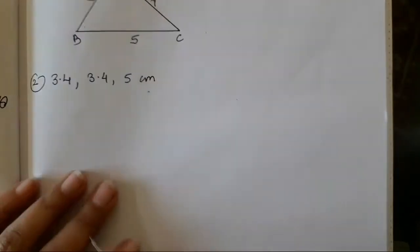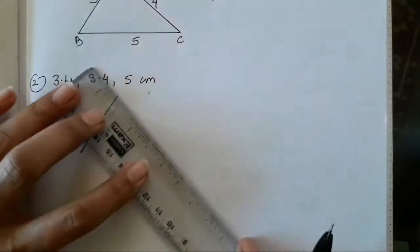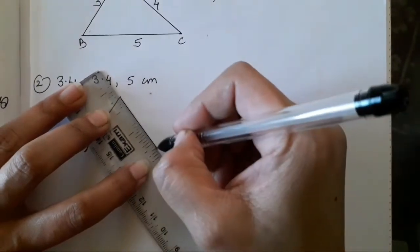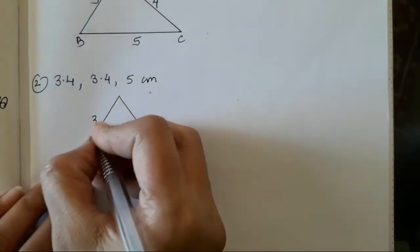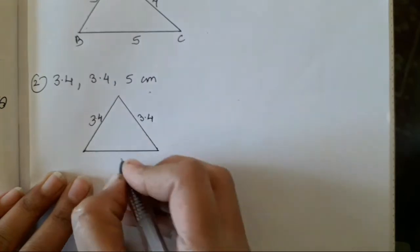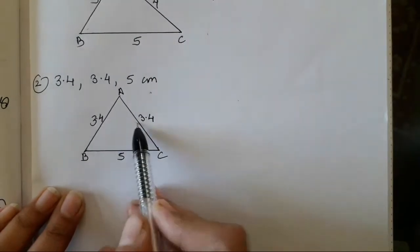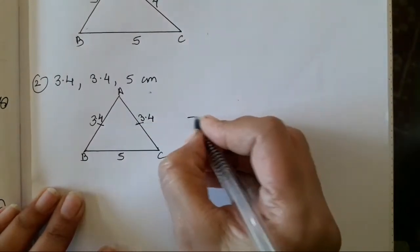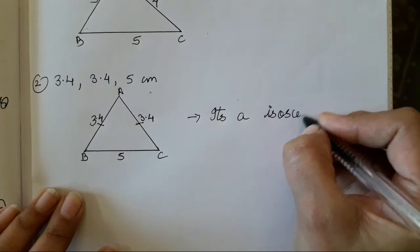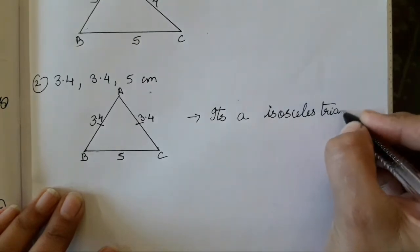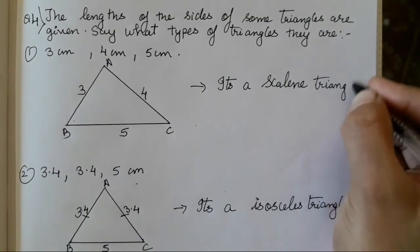Now question number 2: sides are 3.4 cm, 3.4 cm, and 5 cm. You can draw a rough figure — no need to take measurements. Let's mark this triangle ABC with sides 3.4, 3.4, and 5. When two sides of a triangle are equal, it is an isosceles triangle.